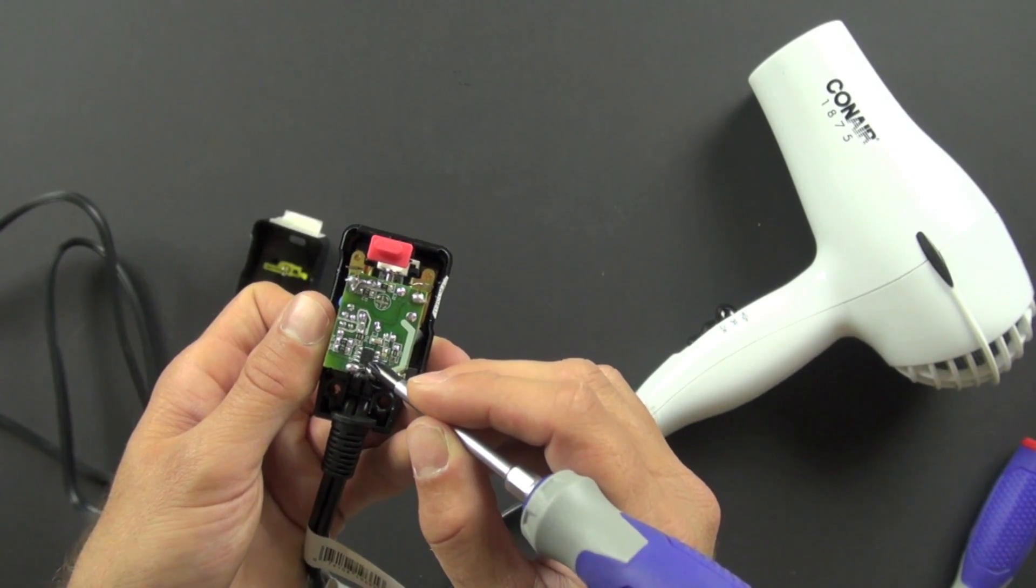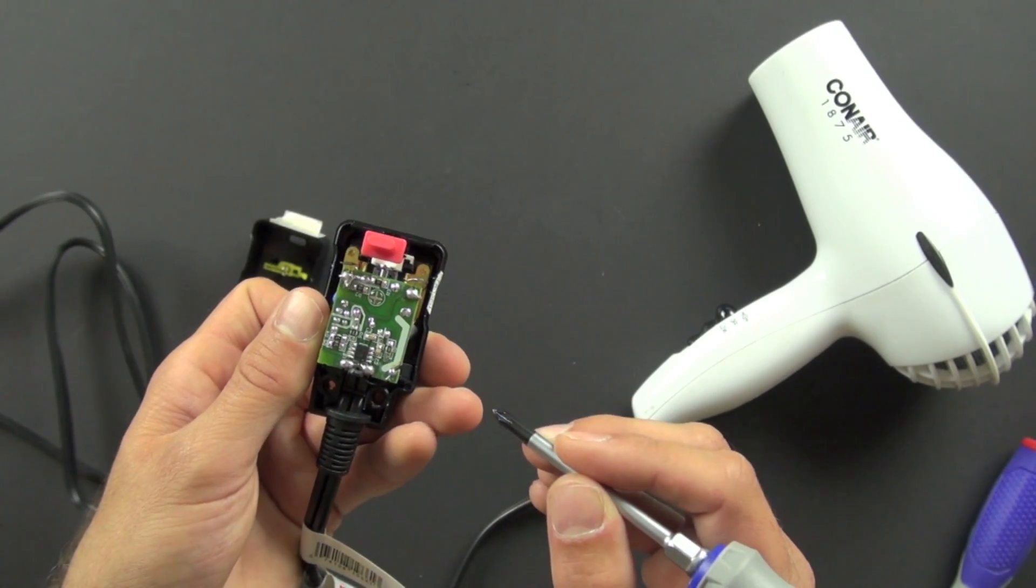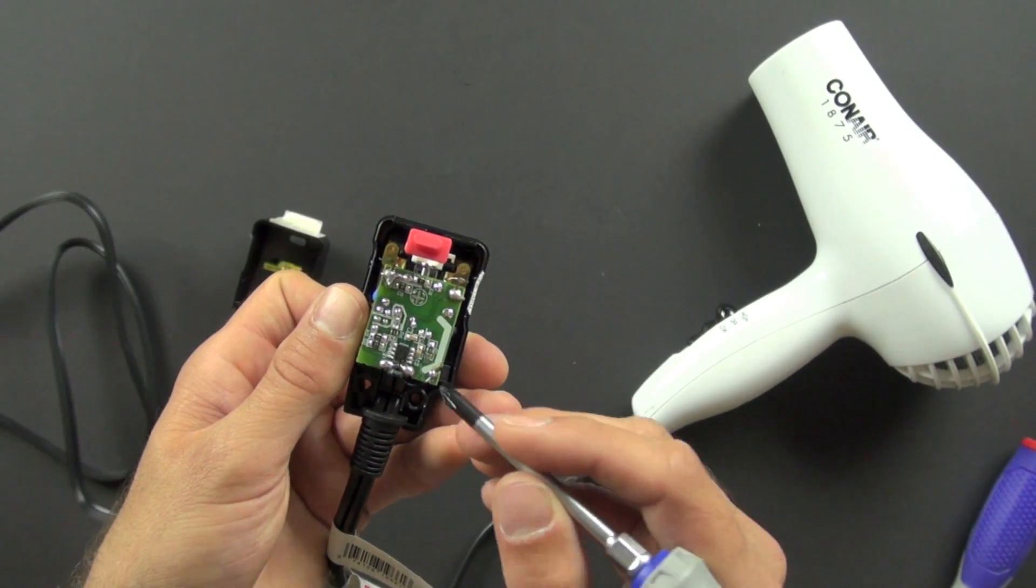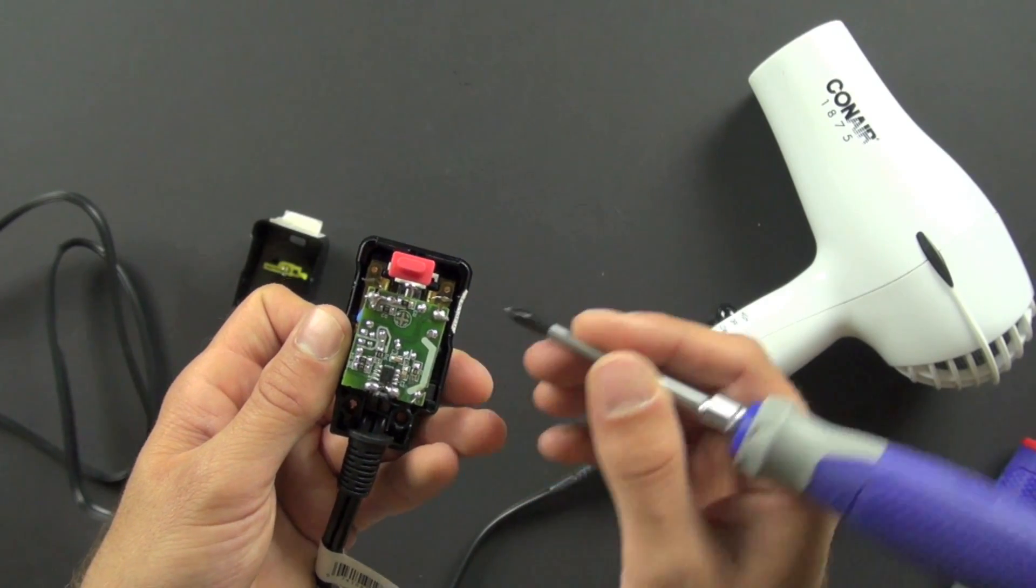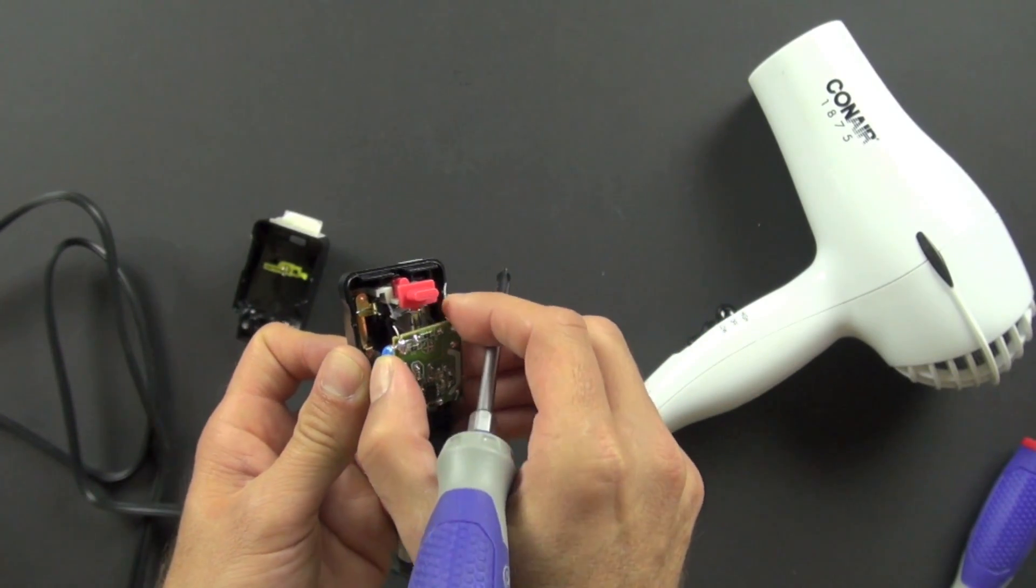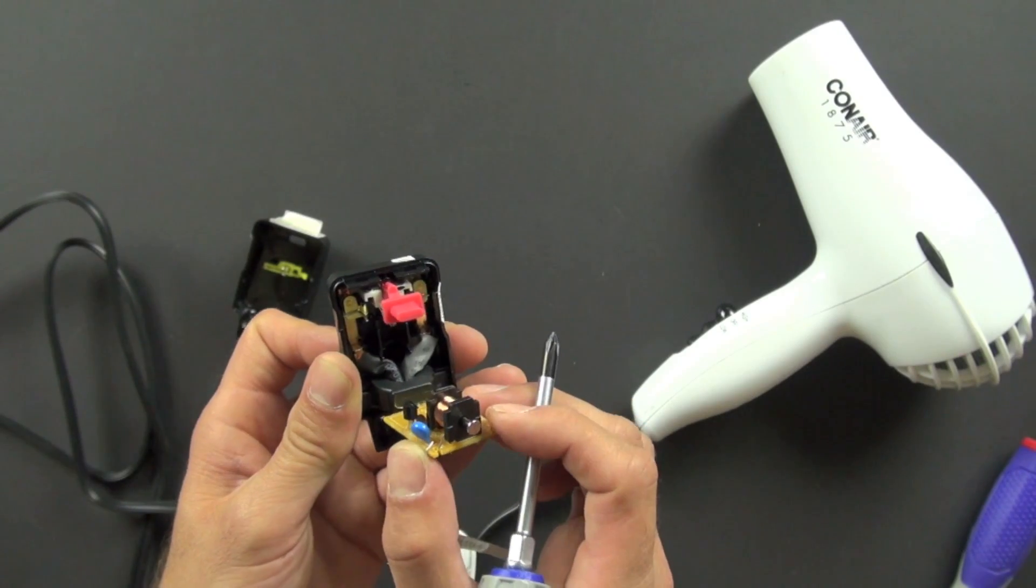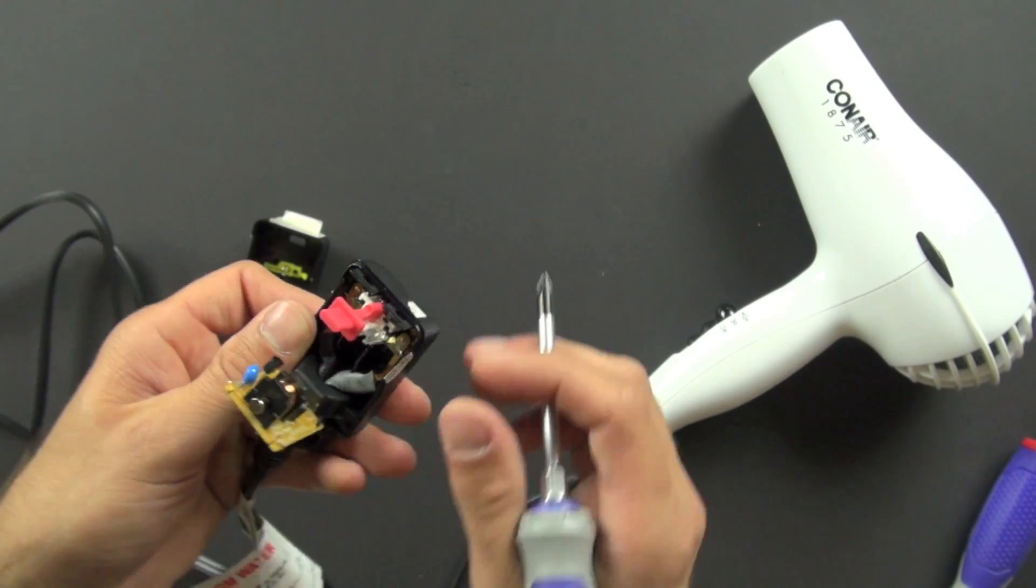And this right here, this part right here is called an integrated circuit. And it actually takes commands from things on the back, takes information from things on the back, and decides what to do with it.